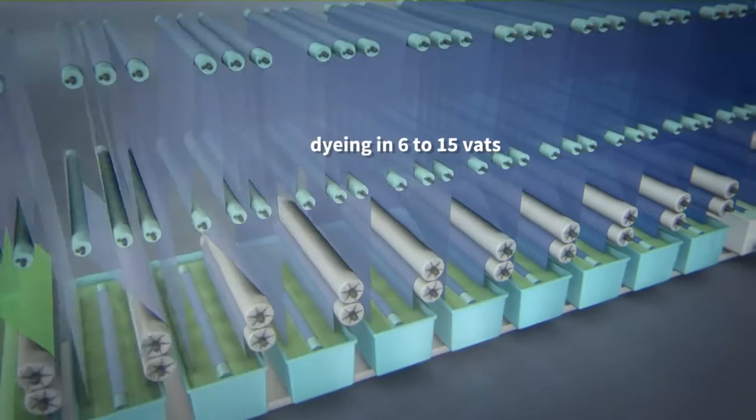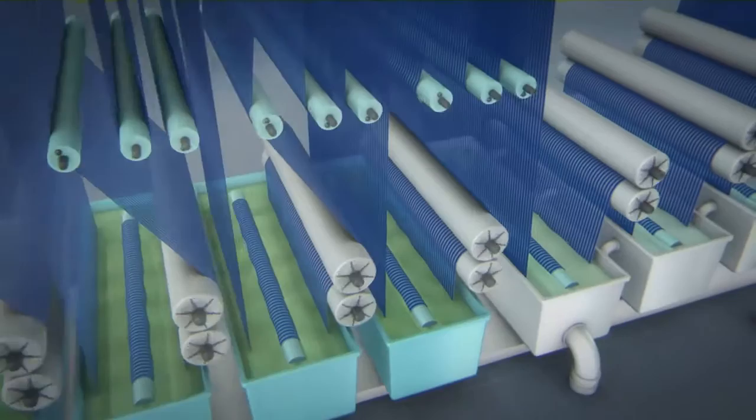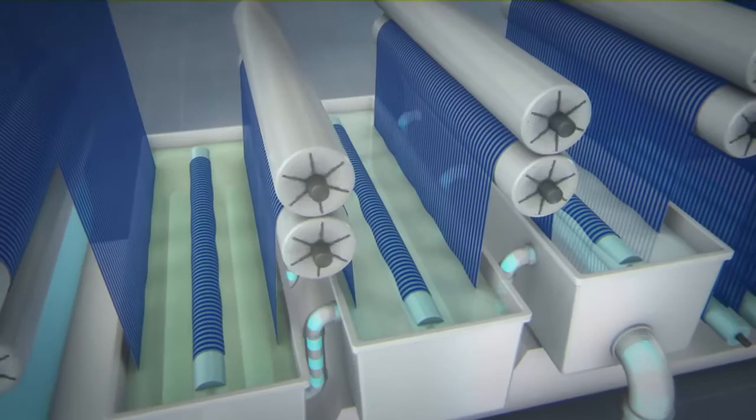For intensive and uniform dyeing, the cotton has to pass through 6 to 15 consecutive dyeing vats, because the fiber absorbs the indigo only very slowly. This process not only consumes vast amounts of energy, but also and above all, large quantities of water.